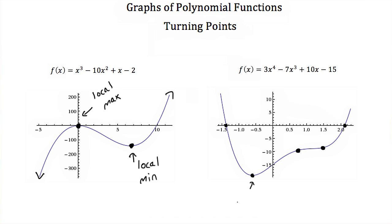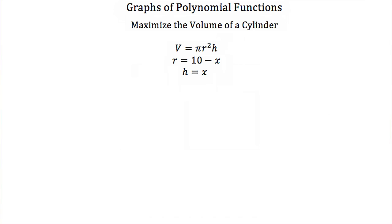So this is a local minimum. This one is a local minimum. And this would be a local max. So now let's see how we can find or use this information about graphs of polynomial functions to maximize the volume of a cylinder. Now the volume of the cylinder is equal to πr²h where r is our radius and h is the height of the cylinder. And we're told that r is equal to 10 minus x and that h is equal to x.